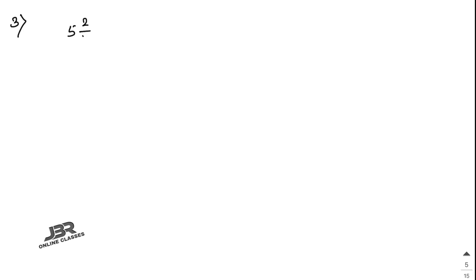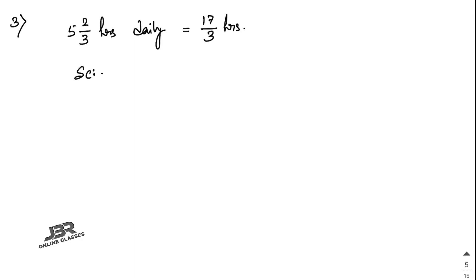Sum number 3: Jasri studies for 5 and 2/3 hours daily. She devotes 2 and 4/5 hours for science and mathematics. How much time does she devote for other subjects? Total time for reading equals 5 and 2/3 hours, which is 17/3 hours.